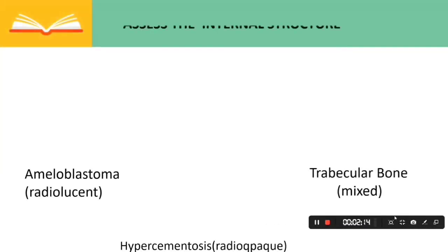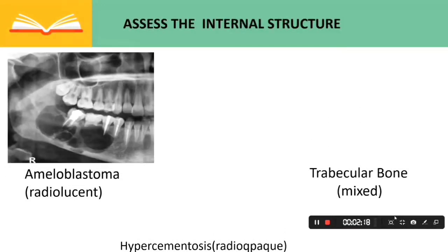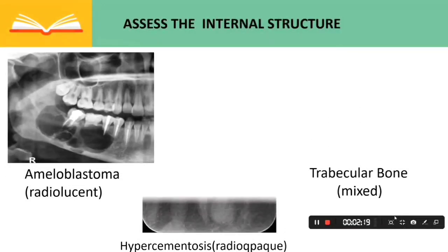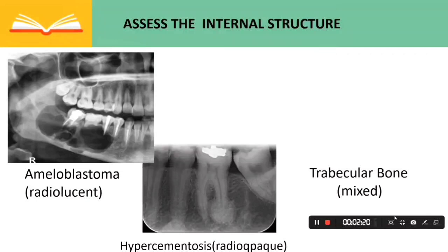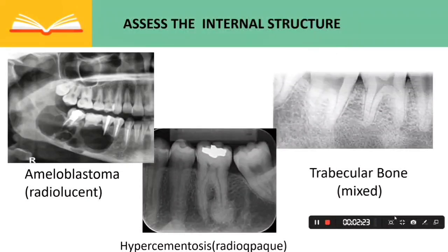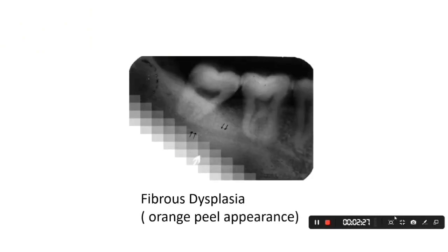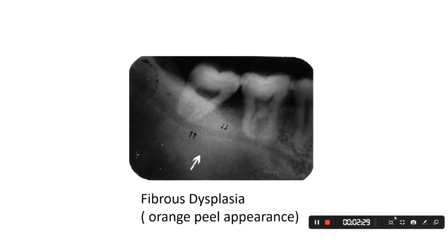Next is assessing the internal structure. It can be radiolucent, such as in ameloblastoma; radiopaque, such as in hypercementosis; or mixed, such as in trabecular bone. A commonly seen mixed lesion is fibrous dysplasia, which gives an orange peel appearance.